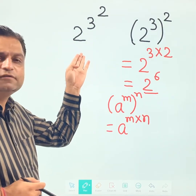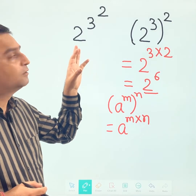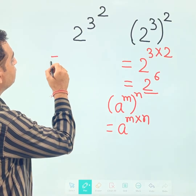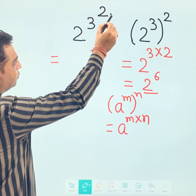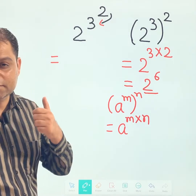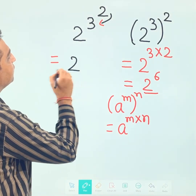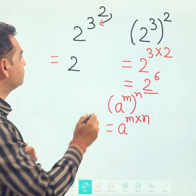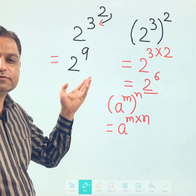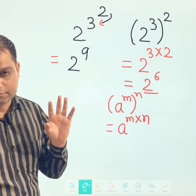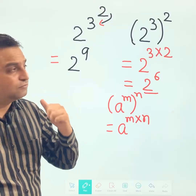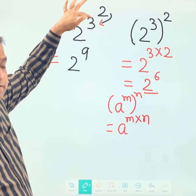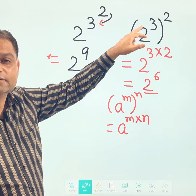But what is the difference when the bracket is not there? For 2 to the power 3 power 2 without brackets, you come from top to bottom. That means first solve the top exponent: 3 squared is 3 times 3, which is 9. So the answer is 2 to the power 9. I know many of you might be getting confused, but you need to come from top to bottom and solve the exponent separately — it is treated as 3 squared, not multiplied.